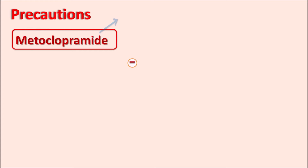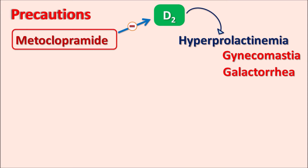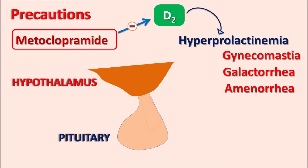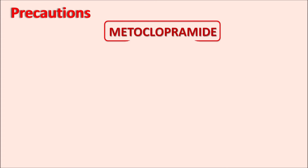Metoclopramide can also increase prolactin levels, resulting in hyperprolactinemia due to D2 receptor blockade. This can produce gynecomastia (breast enlargement), galactorrhea (secretion of milk), and amenorrhea (lack of menstruation). These effects occur through the HP axis: metoclopramide-induced hyperprolactinemia inhibits gonadotropin-releasing hormone via negative feedback, reducing gonadotropes (FSH and LH) and thus decreasing steroid hormones like testosterone and estrone, resulting in impotence.